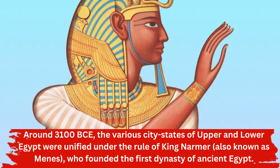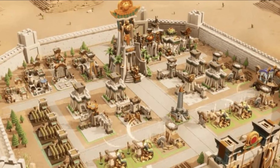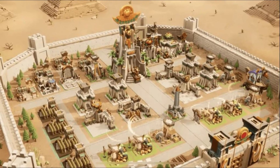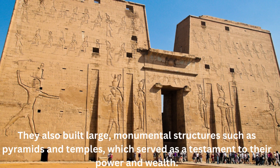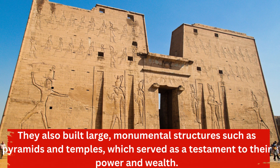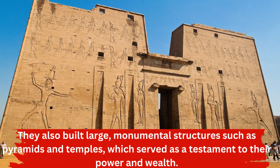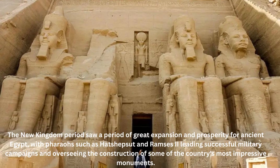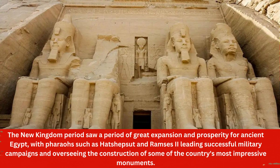This event is often referred to as the Unification of Egypt and is considered the start of the Old Kingdom period of ancient Egypt. Under the Old Kingdom, the pharaohs established a centralized government and developed a highly sophisticated system of writing, mathematics, and architecture. They also built large monumental structures such as pyramids and temples. The New Kingdom period, circa 1550–1070 BCE, saw a period of great expansion and prosperity, with pharaohs such as Hatshepsut and Ramses II leading successful military campaigns and overseeing the construction of some of the country's most impressive monuments.